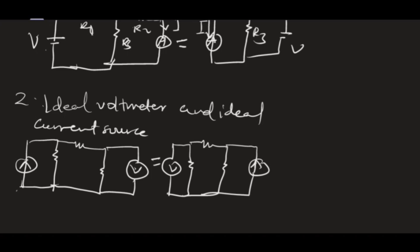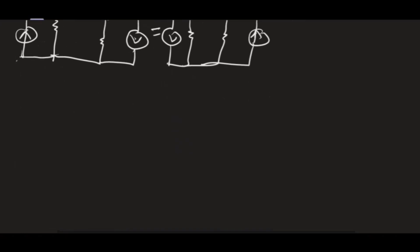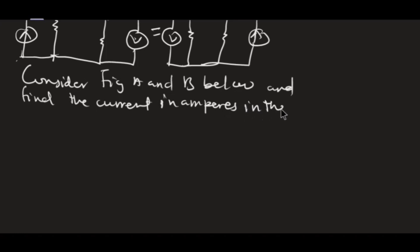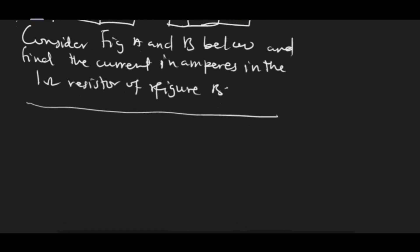Now let's solve a problem to understand how we use the reciprocity theorem to make things easier. Note that the reciprocity theorem is normally used with other theorems like the superposition theorem in order to make simplification easier — it's not normally used alone. The problem says: consider figures A and B below and find the current in amperes.